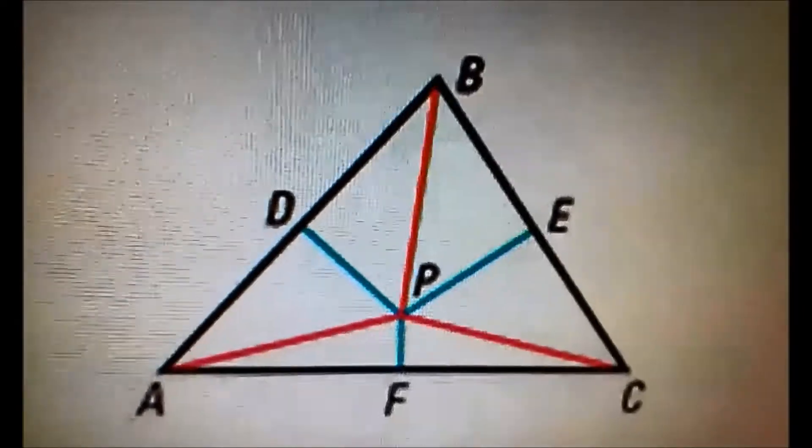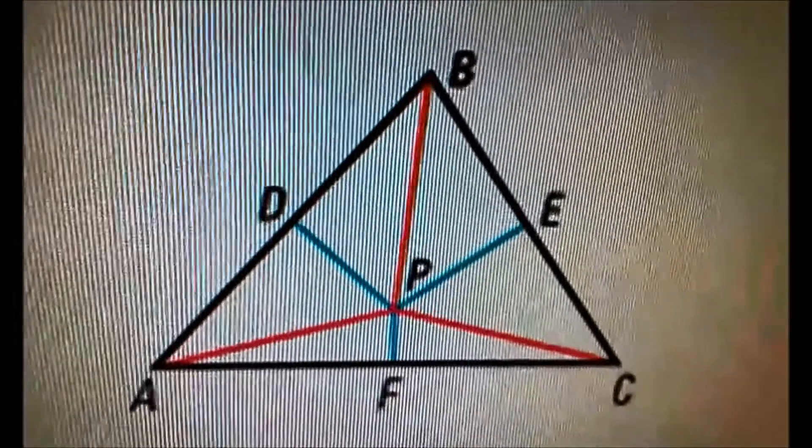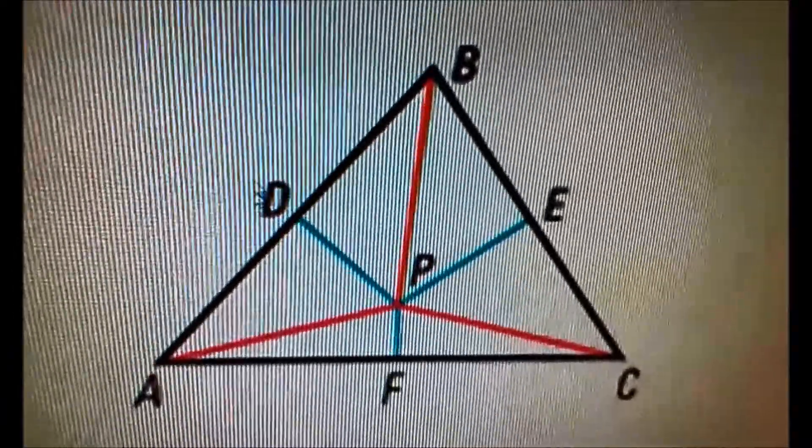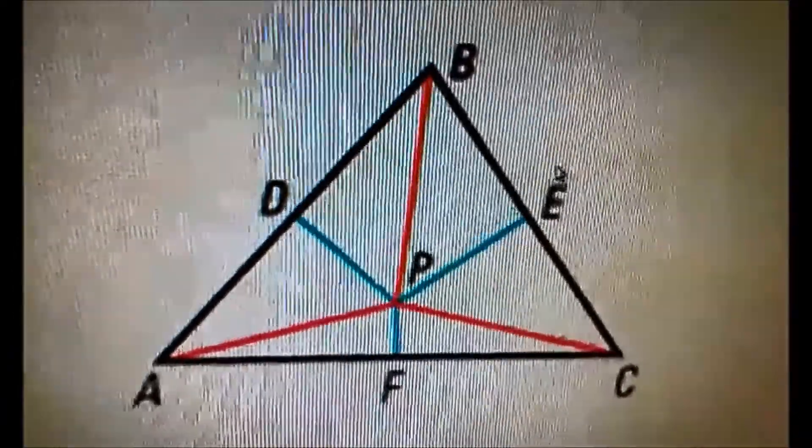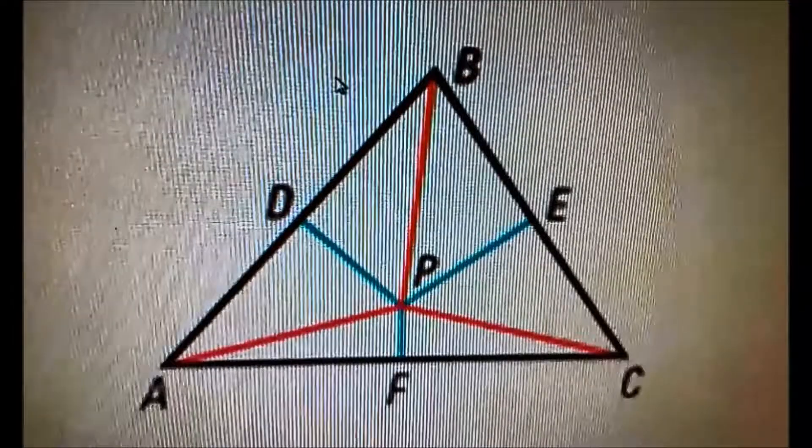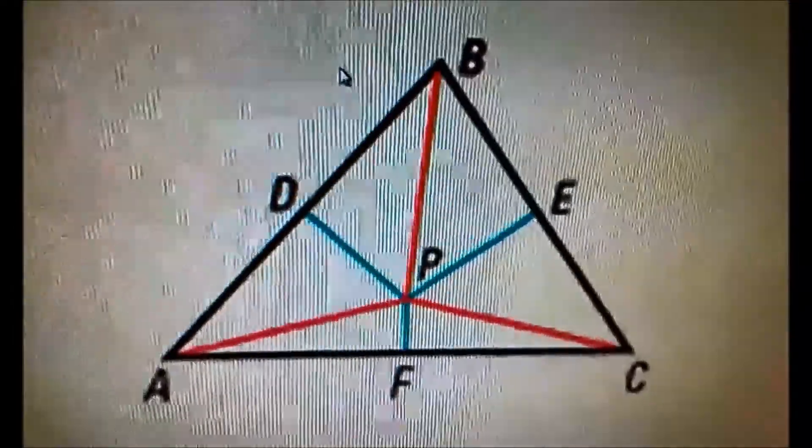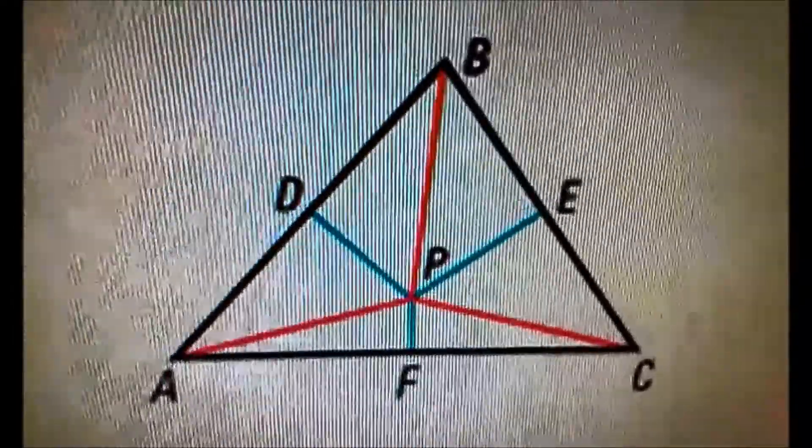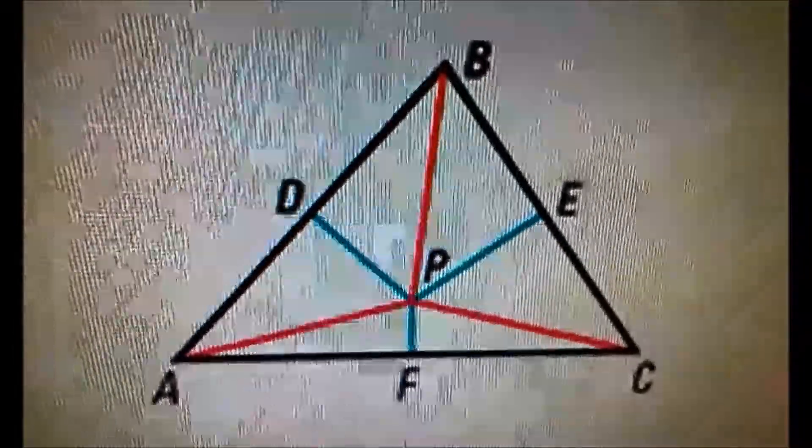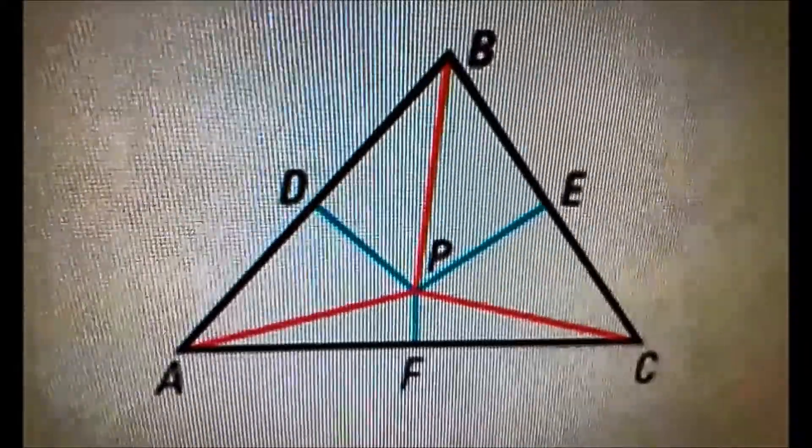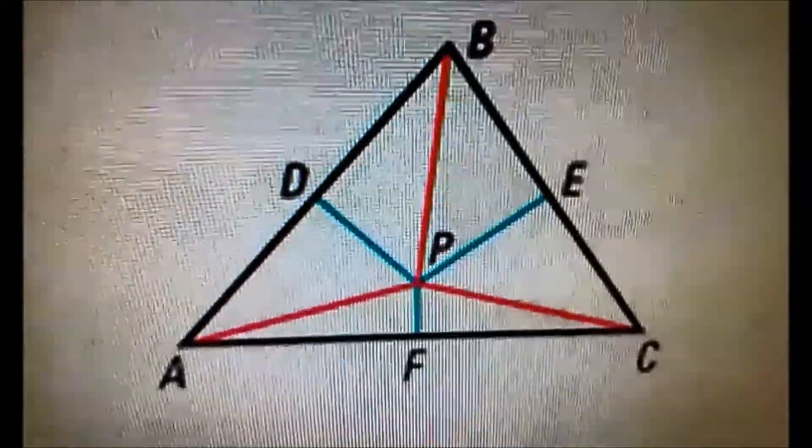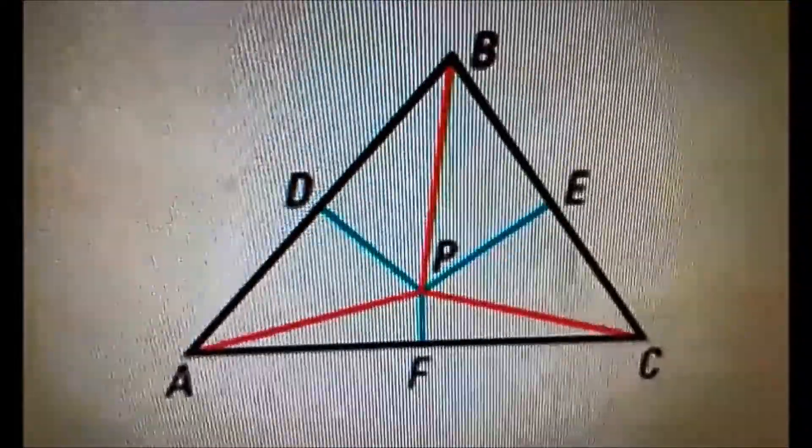Next is the concurrency of perpendicular bisectors of a triangle. Based on this example, blues are the perpendicular bisectors. In the center, P is the circumcenter, what they call it for the perpendicular bisector, they call it a circumcenter.